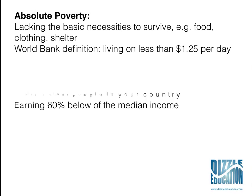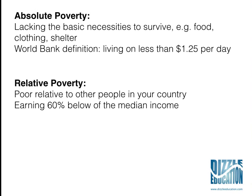Relative poverty is defined as where you are poor relative to the other people within your country — your income is very low compared to that of other people. There are lots of different definitions of relative poverty. The UK's definition, one of the most commonly used, is where you're earning less than 60% of the median income in the country. Anyone earning less than that would be considered to be in relative poverty — relatively poor compared to everyone else in their country.